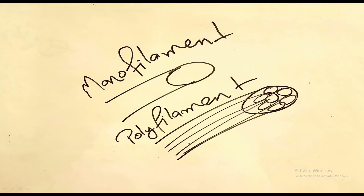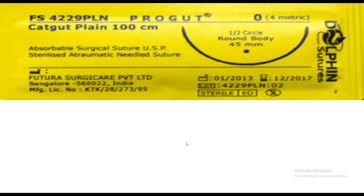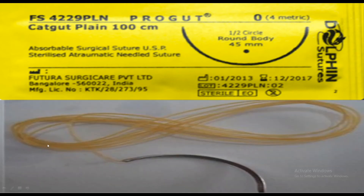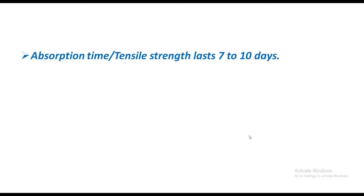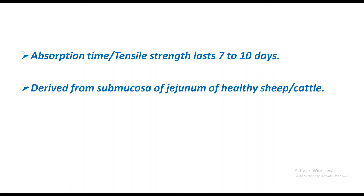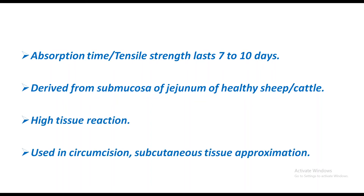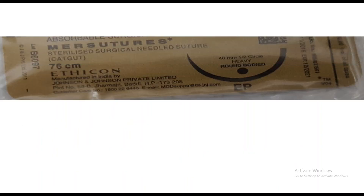Plain catgut is yellow in color, 100 cm in length, with a half-circle needle, a round body, and a 4.5 mm tip. Its tensile strength lasts 7 to 10 days. It is derived from the submucosa of the jejunum of healthy sheep or cattle. It causes high tissue reaction and is used in circumcision and subcutaneous tissue approximation.